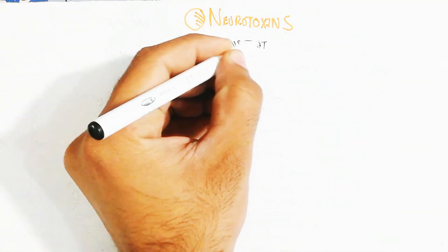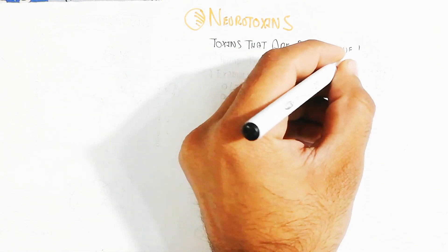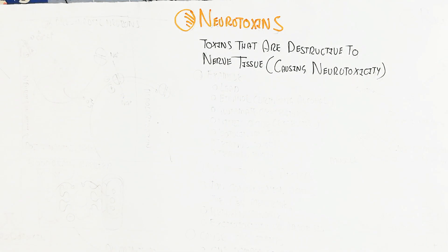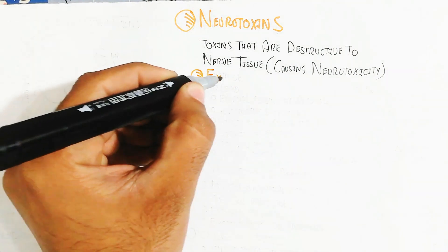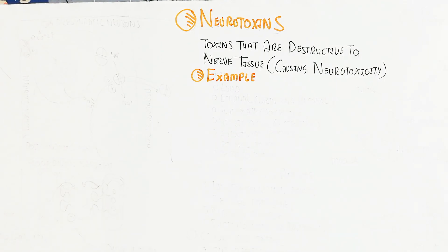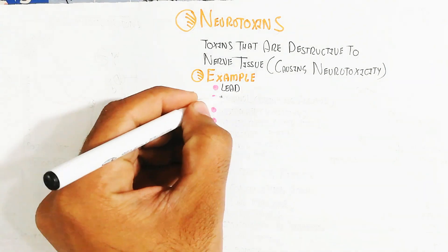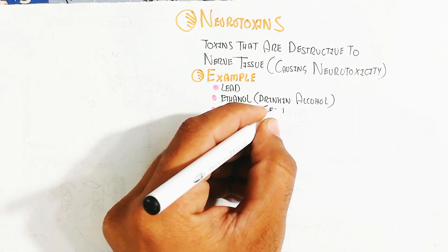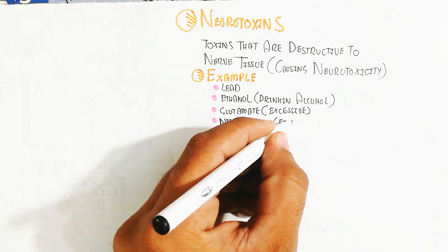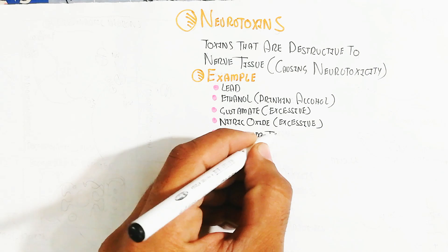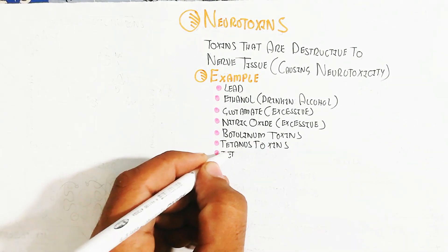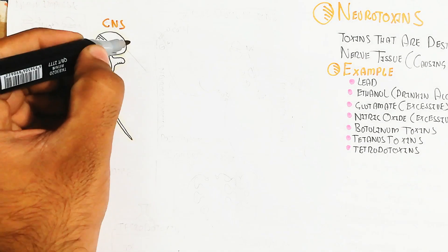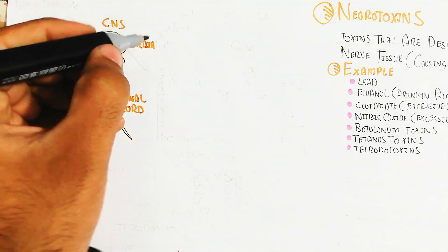In this video we will understand about the neurotoxin. The neurotoxin is the toxin that affects and is destructive to nerve tissue, causing neurotoxicity. Examples include lead, ethanol (drinking alcohol), excessive glutamate — while normal glutamate is functional for the brain — excessive nitric oxide, botulinum toxin, tetanus toxin released from bacteria, and tetrodotoxin.